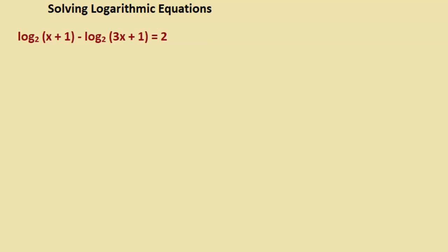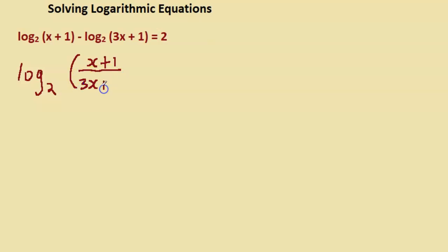Here's another problem. To solve this we can consolidate, but notice we're subtracting, so we consolidate by dividing. This gives us log base 2 of (x plus 1) over (3x plus 1) — that's the second law — equal to 2.